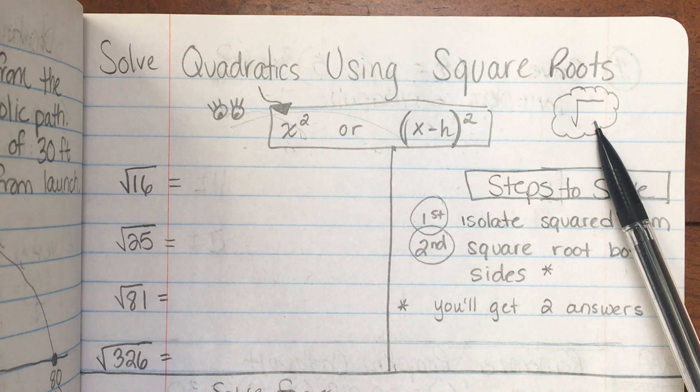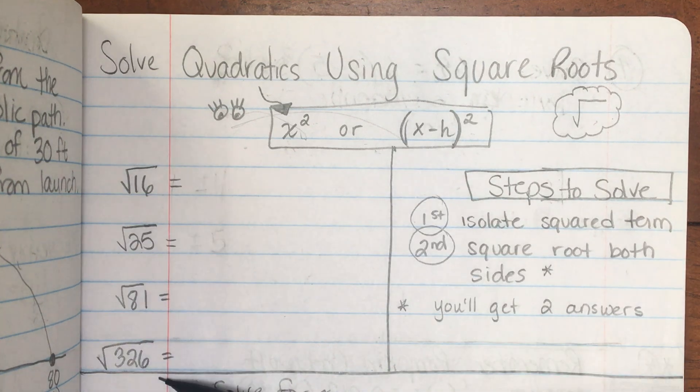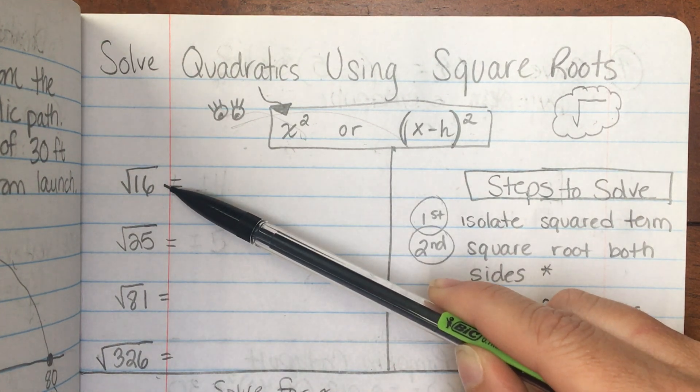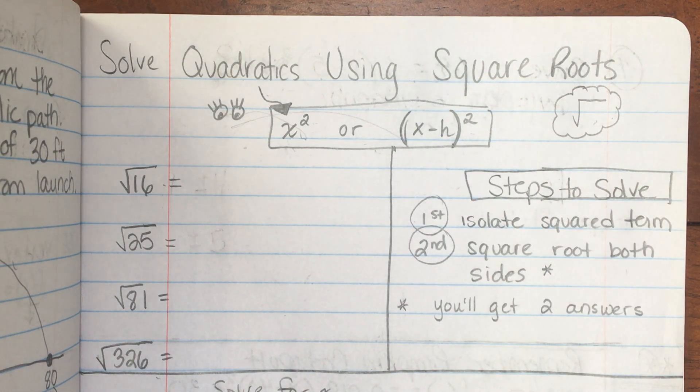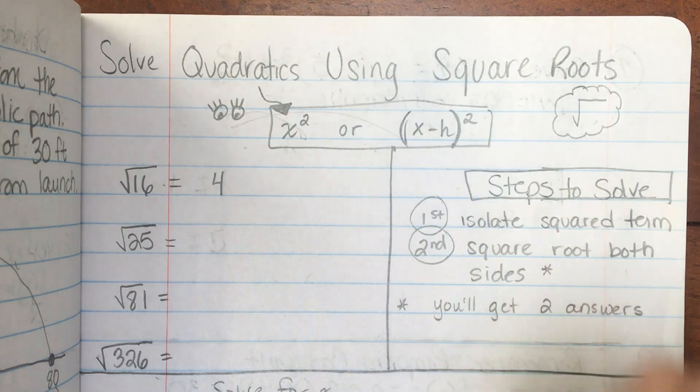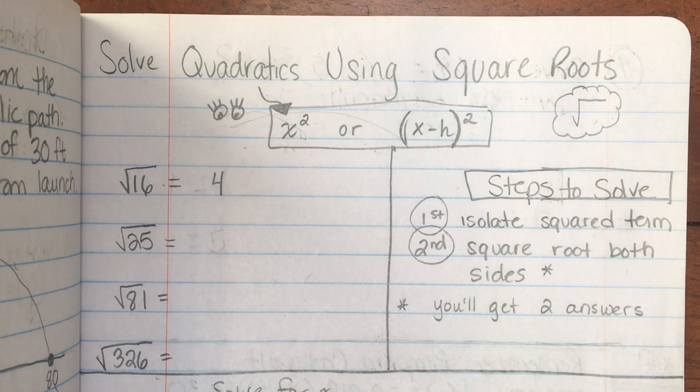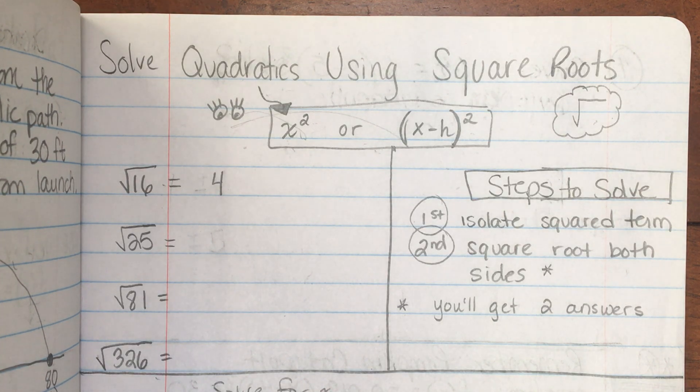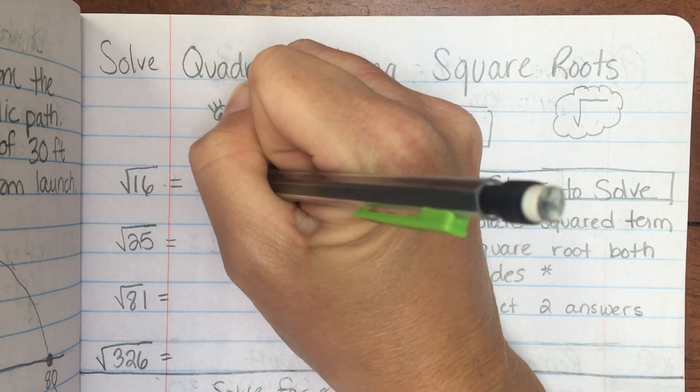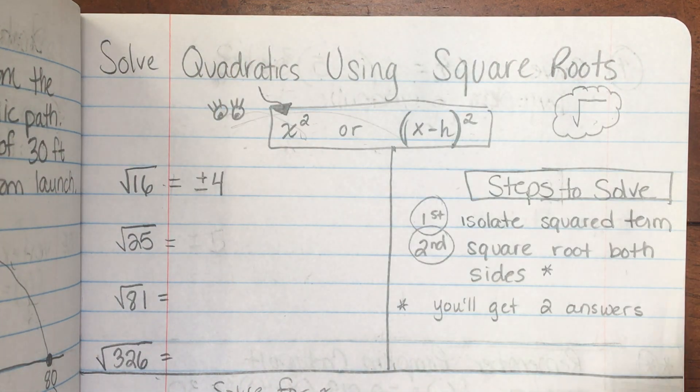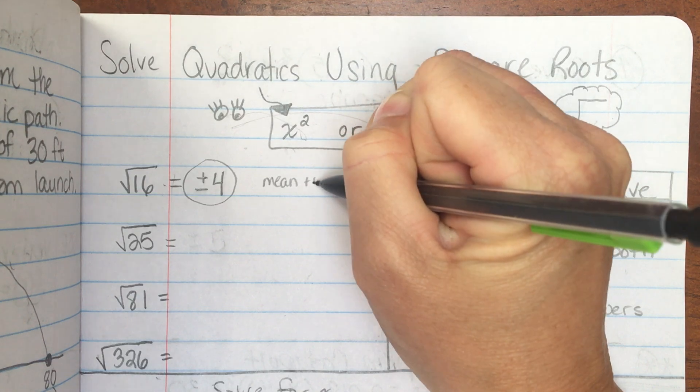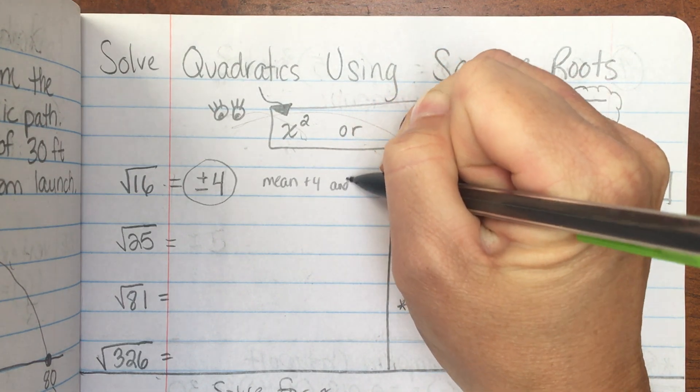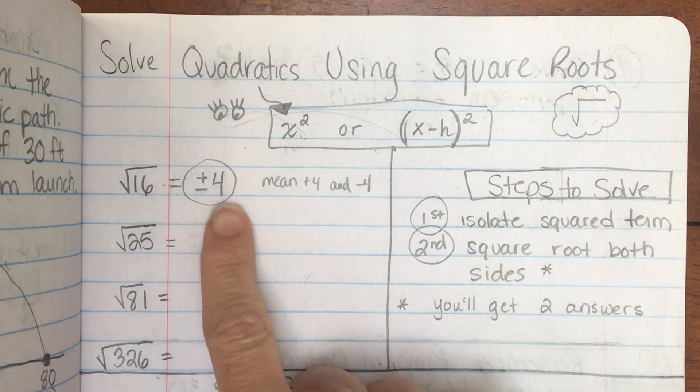This is a square root symbol. Let's just practice some basic square roots. The square root of 16 means what two numbers multiply to itself to get 16. Hopefully in your head you thought 4, but there's also another answer. What else times itself gives you a positive 16? Yes, negative 4. So your answer is positive and negative 4, and we can say it like that. So this means a positive 4 and a negative 4. It kind of like shortens it. It's like a shortcut.